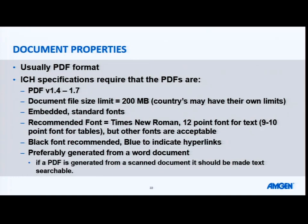Usually most documents in your submission will be PDF. The ICH specifications require PDFs of certain versions between 1.4 and 1.7. The document file size limit has updated to 500 megabytes with the ICH, but at this point no eCTD countries have actually updated their specifications to allow 500 megabytes. Traditionally, most of them are at the 200 megabyte limit, though some companies may still have their own limits. There have been times in the past where certain regions have required a much smaller limit than others.